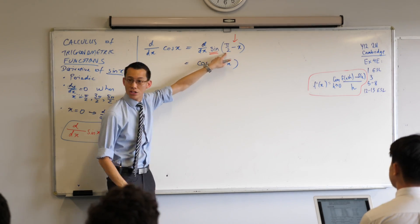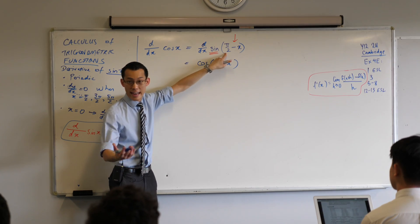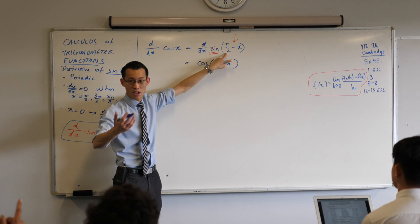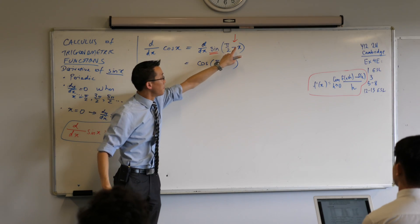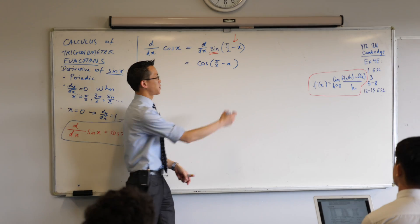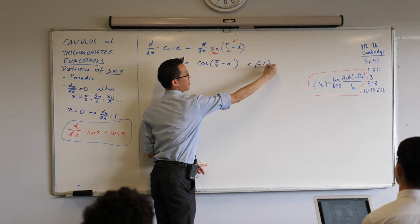Now, this pi on 2 is just like the negative 4 in that original function, right? Does it change our slope? No, it just changes where you are, right? This is the part that matters. And the coefficient is? Negative 1. So I'm going to multiply this whole thing by negative 1.